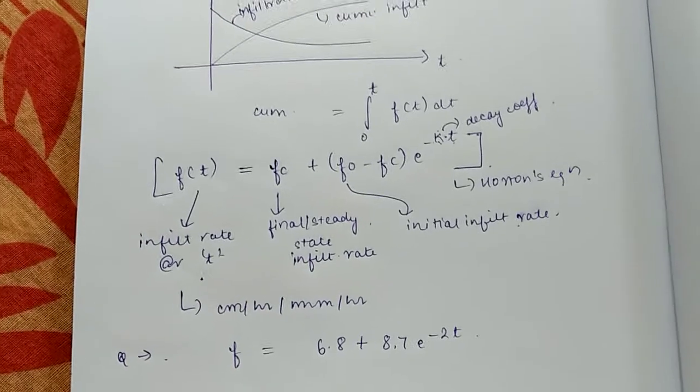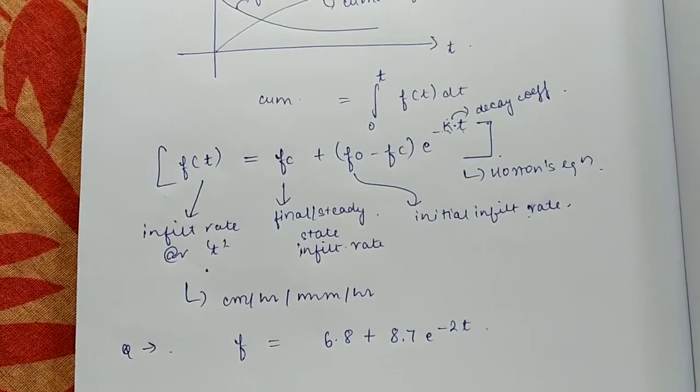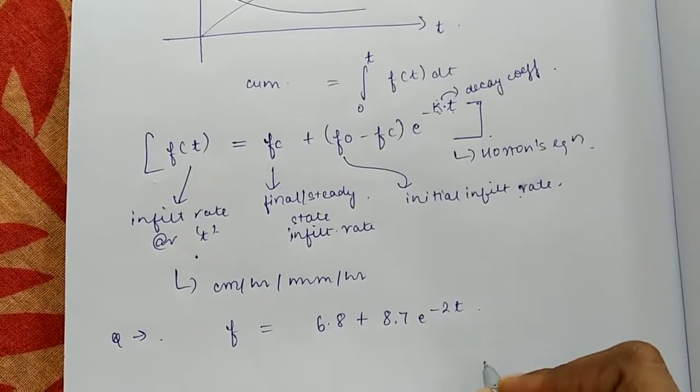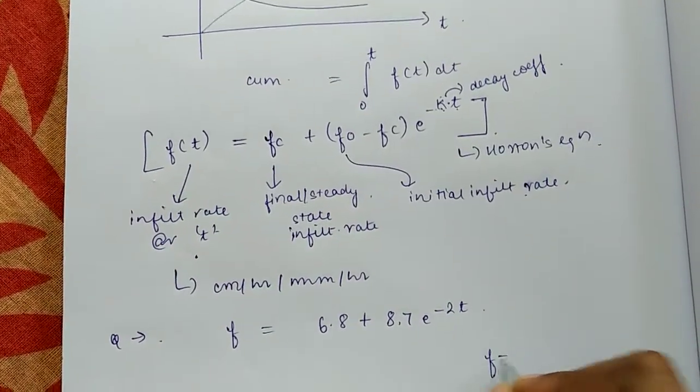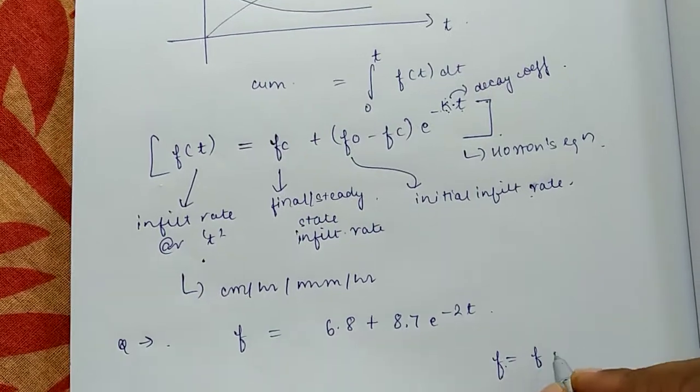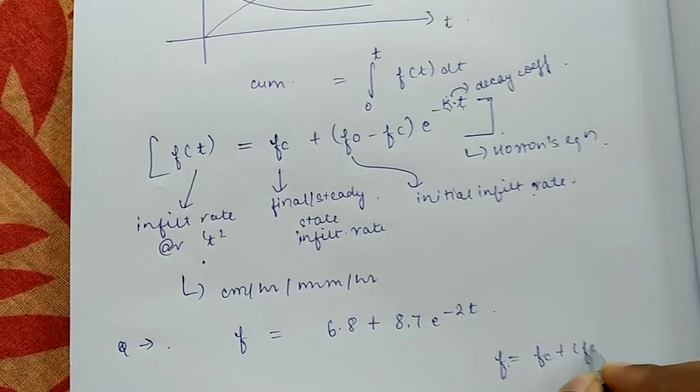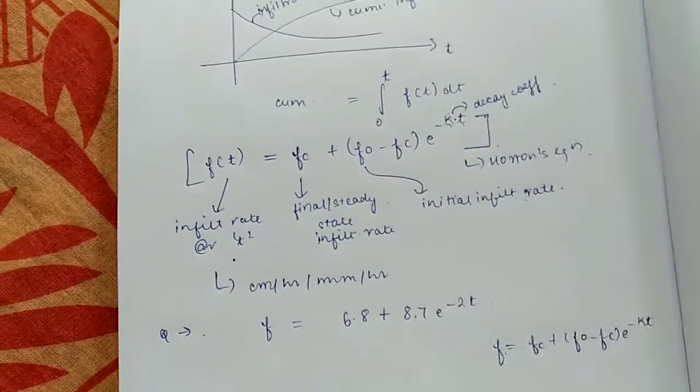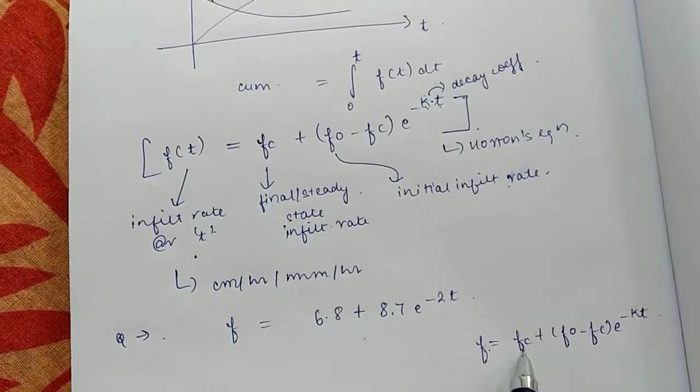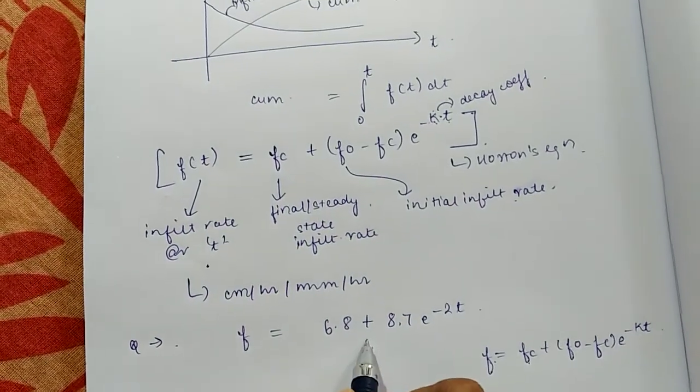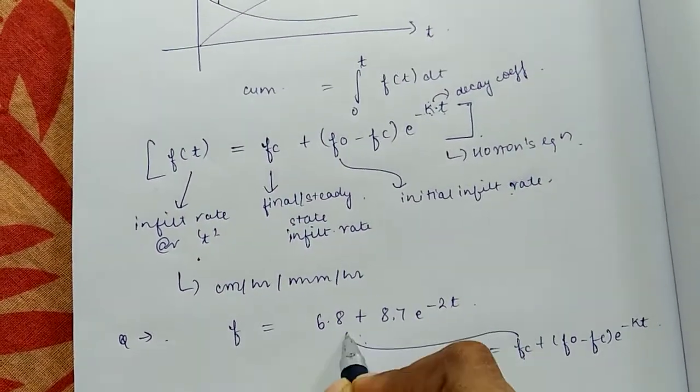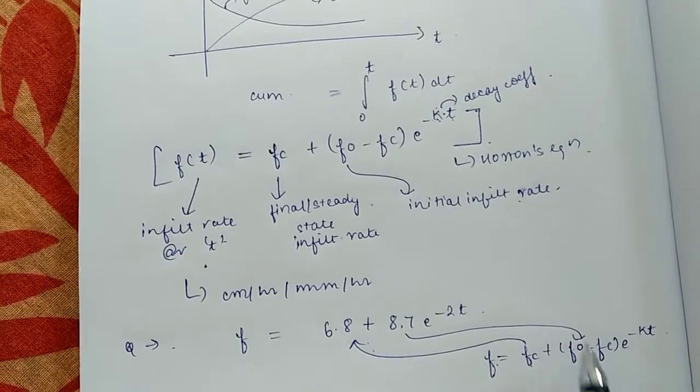The question is to find out the parameters of this equation. Parameters are the unknowns of the equation. We know Horton's equation is f at any instant t equals fc plus (f0 minus fc) e to the power minus kt. If you compare these two equations, the Horton equation and the equation given for our catchment, can I compare these two equations?